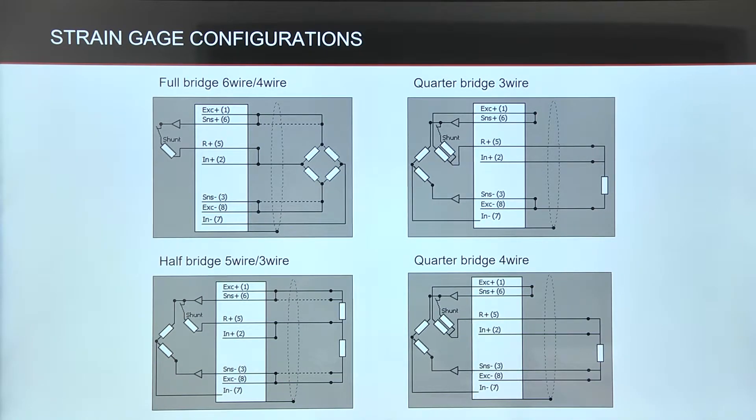If we use four strain gauges, we have full bridge measurement. Two strain gauges are in half bridge configuration, and one strain gauge accordingly gives us quarter bridge mode.